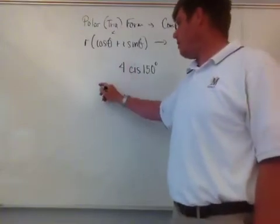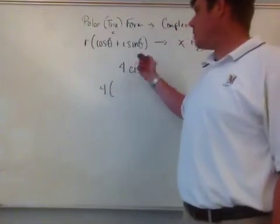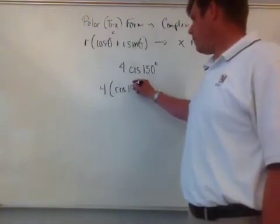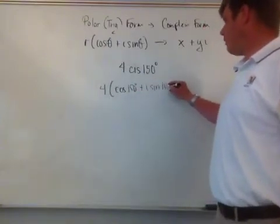So what I got here is my 4, which is my r, so it's my multiplier. So 4 times cosine, same theta, they're going to be the same, so 150 degrees, plus i sine 150 degrees.